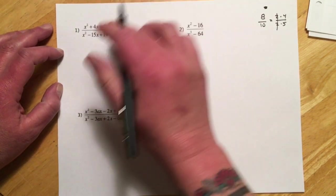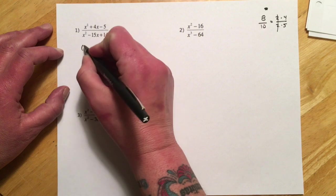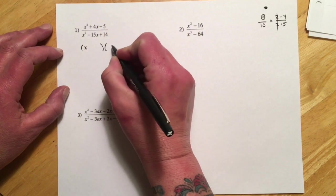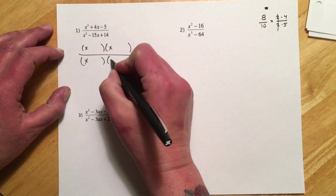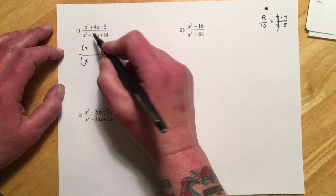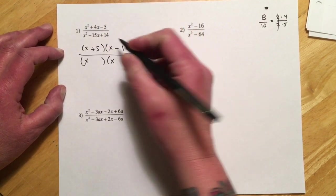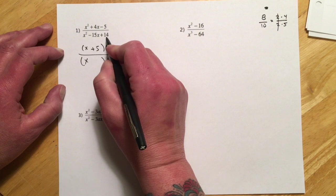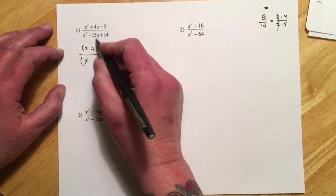So for this first problem, we've got a couple of trinomials. They're friendly, they lead with one. So I can just set up my parentheses here. And then I'm looking for two numbers that multiply by negative five, add to be positive four. So that's going to be a plus five and a minus one. And for the fourteen, adds to negative fifteen. So that would be a negative one and a negative fourteen.